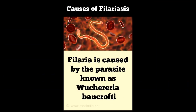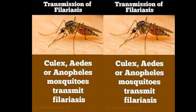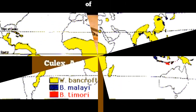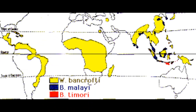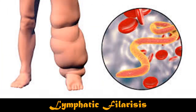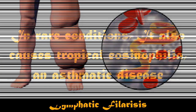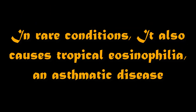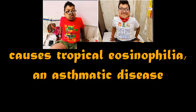Wuchereria bancrofti is the most prevalent of the three and affects over 120 million people, primarily in Central Africa and the Nile Delta, South and Central America, the tropical regions of Asia including southern China, and the Pacific Islands. If left untreated, the infection can develop into a chronic disease called lymphatic filariasis. In rare conditions, it also causes tropical eosinophilia, an asthmatic disease.